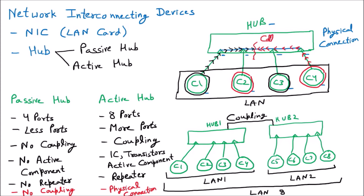Due to collision, there is packet loss. To overcome packet loss, we have error correction, detection policies, collision detection and correction, and retransmission of data. However, if C1 and C4 keep sending at the same time, collisions happen repeatedly. Multiple collisions reduce the efficiency of the network significantly.